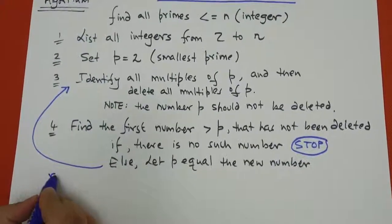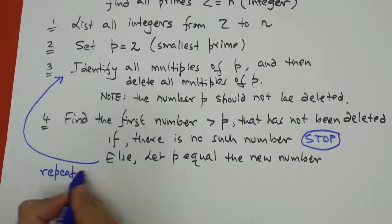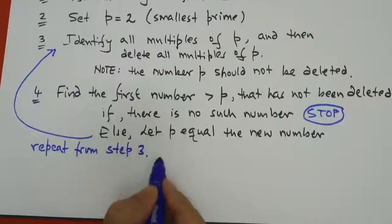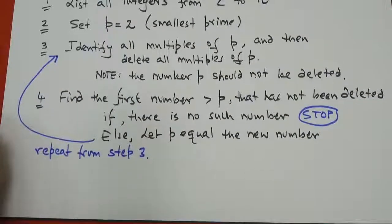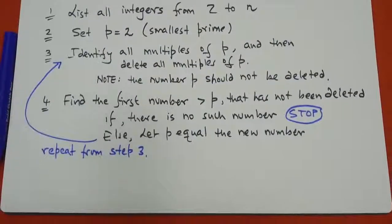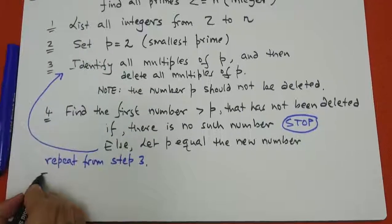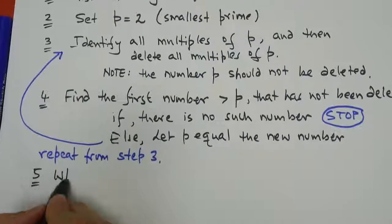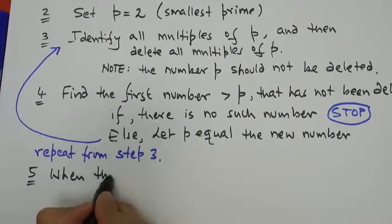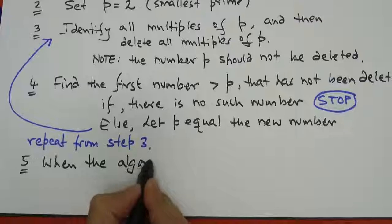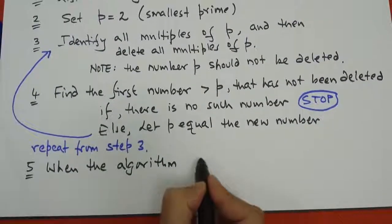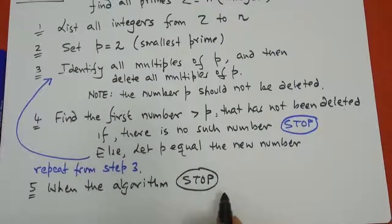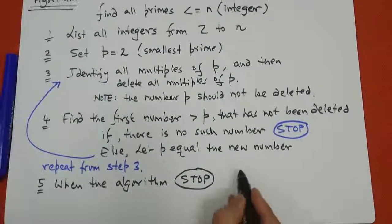And then we get to the final part of the algorithm and that is step number 5. When the algorithm stops, then all remaining numbers are primes. And that's it.